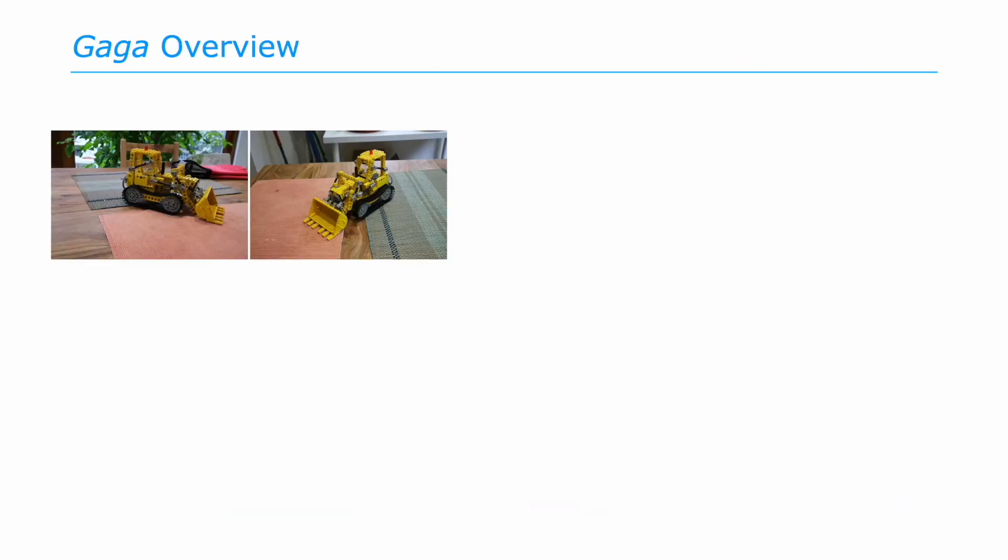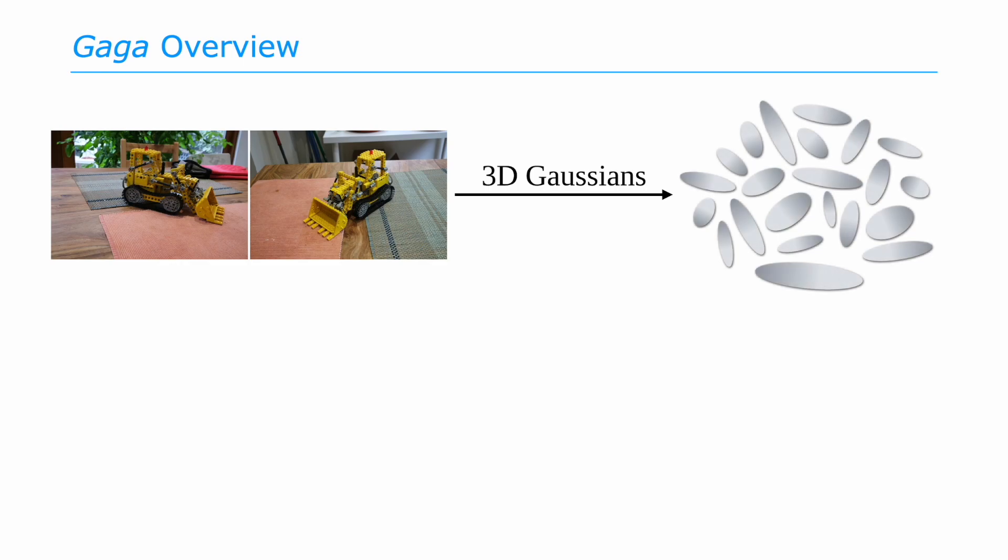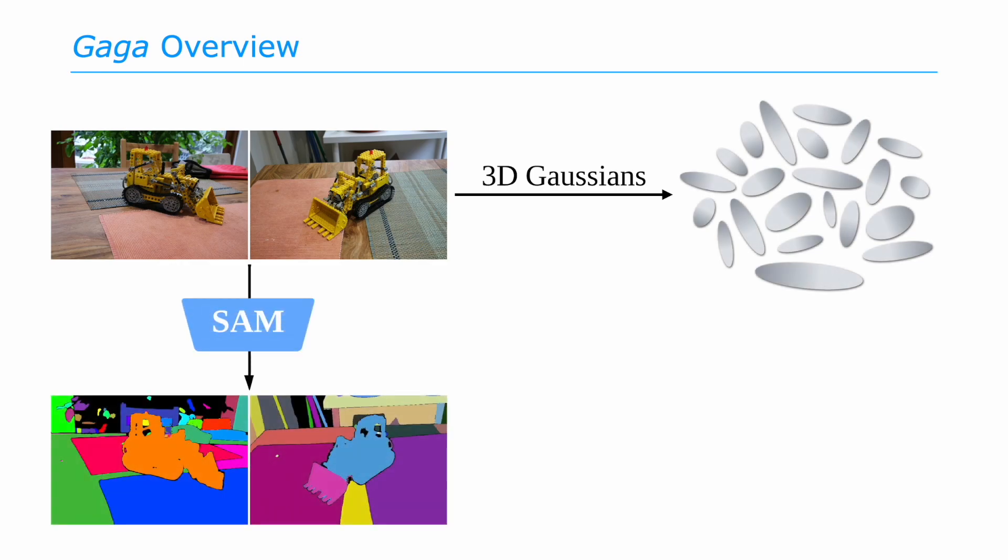Given a collection of posed images, Gaga uses Gaussian splatting to reconstruct the 3D scene and adopts an open-world segmentation model to acquire 2D segmentation masks.